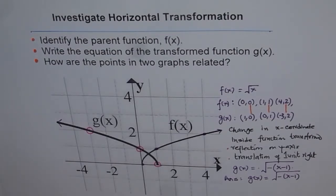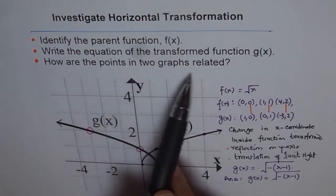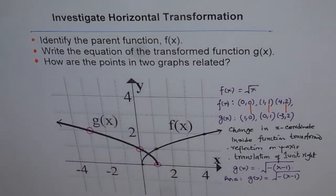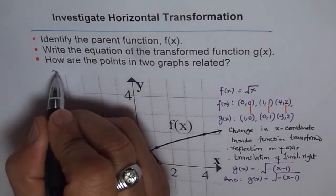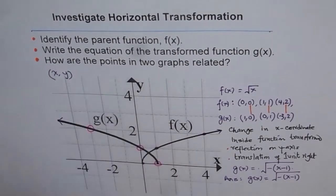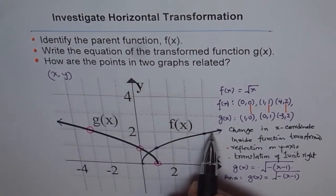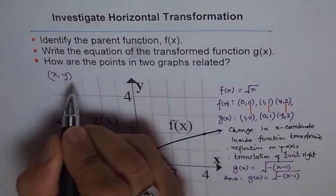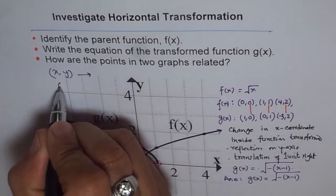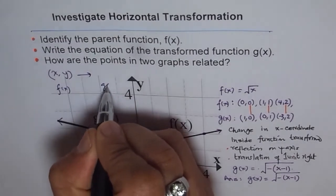Now, coming back to question number part three of this question. Now part three says, how are the points in the two graphs related? So we say, let us say that (x,y) is a coordinate point on f(x). Any, any. We took three in particular. Then on g of, this is on f(x). Then on g(x), what is happening?